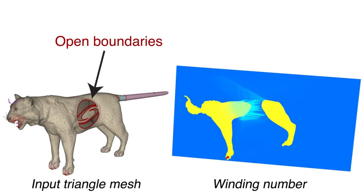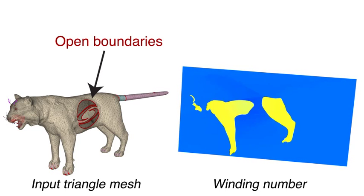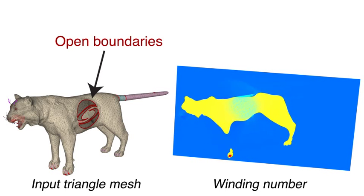The winding number is well defined and even harmonic, regardless of the self-intersections, non-manifold edges, and open boundaries in the input mesh.